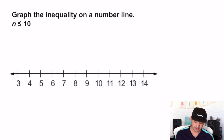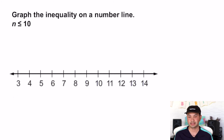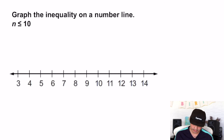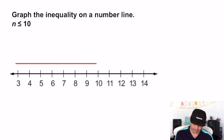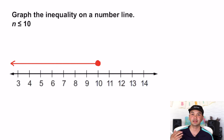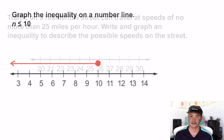Graph the inequality n ≤ 10 on a number line. Less than 10 is to the left of it, and 'or equal to' means it can also include 10. So that's a closed circle going to the left.